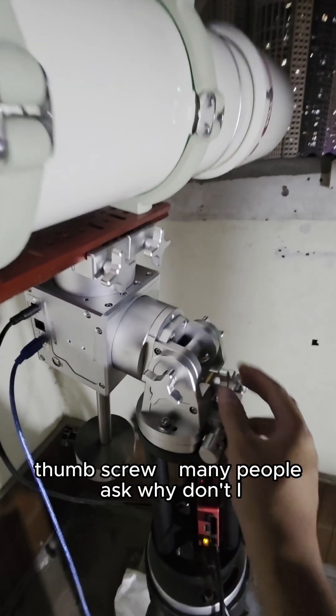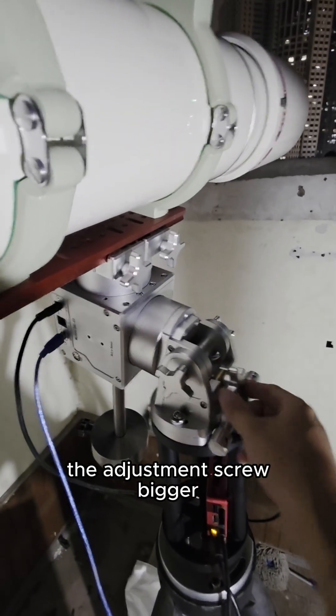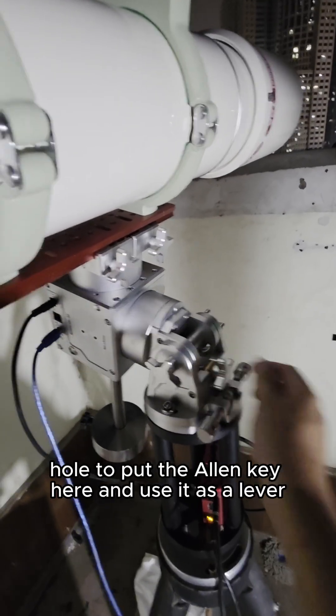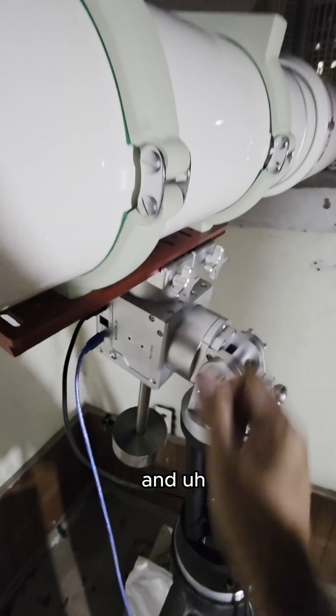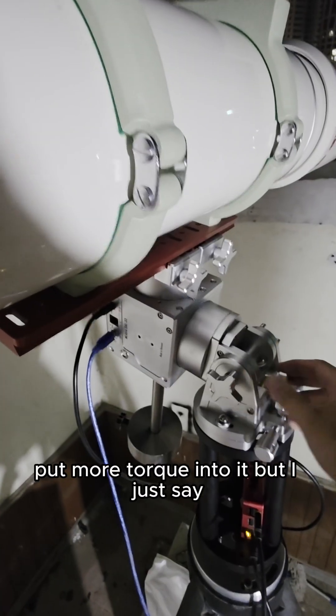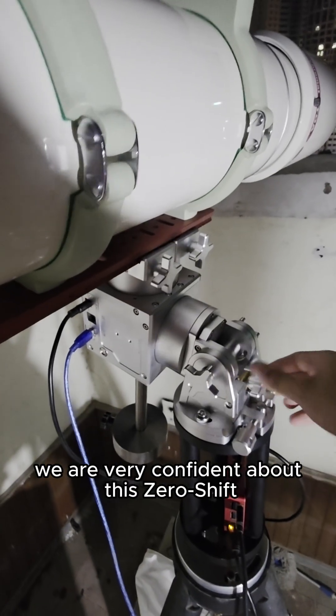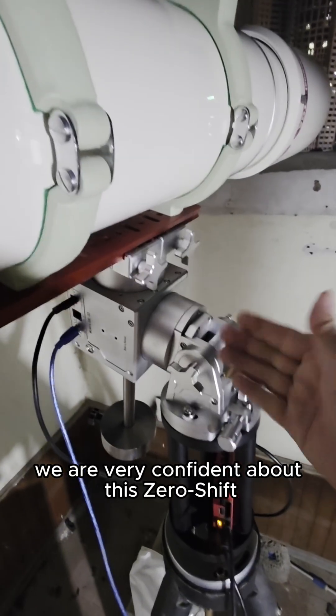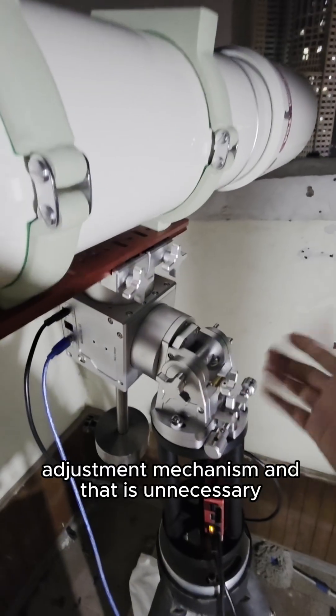Many people ask, why don't we make the adjustment screw bigger, the thumb screw bigger, or have some hole to put the Allen key here and use it as a lever and put more torque into it.